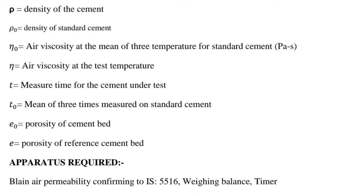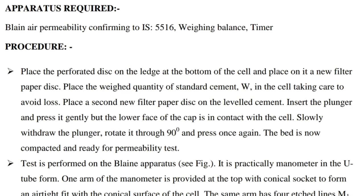Apparatus required: Blaine air permeability apparatus conforming to IS 5516, weighing balance, and timer. Procedure: First, place the perforated disc on the ledge at the bottom of the cell and place on it a new filter paper disc. Place the weighed quantity of standard cement W in the cell, taking care to avoid loss. Place a second new filter paper disc on the leveled cement. Insert the plunger and press it gently until the lower face of the cap is in contact with the cell. Slowly withdraw the plunger, rotate it through 90 degrees and press once again. The bed is now compacted and ready for the permeability test.